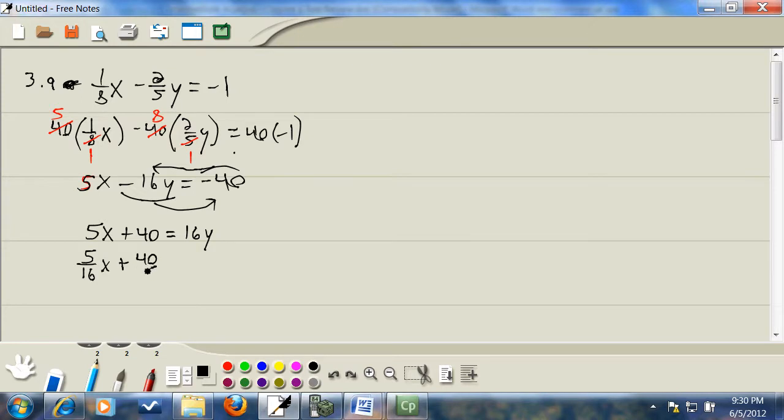The pen actually works better if I go slow, but I like to write fast. And then I'll divide that by sixteen. So those are going to cancel. So we've got five sixteenths x plus, and forty and sixteen both divisible by eight, so that gives me five halves. And that's our answer.